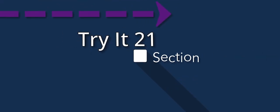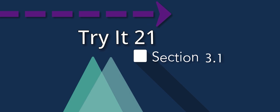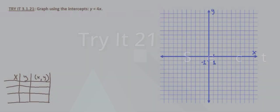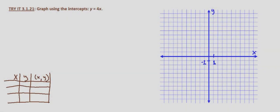In this example we're looking at a situation in which there's nothing being added to the variable term when y is isolated on one side. In other words, we're looking at what we'll later know as a direct variation, and what that means is that the x and y intercept are the same. They're the origin when nothing's being added to the variable term.